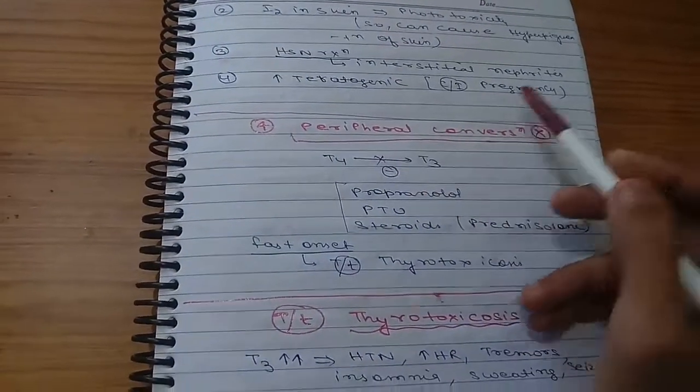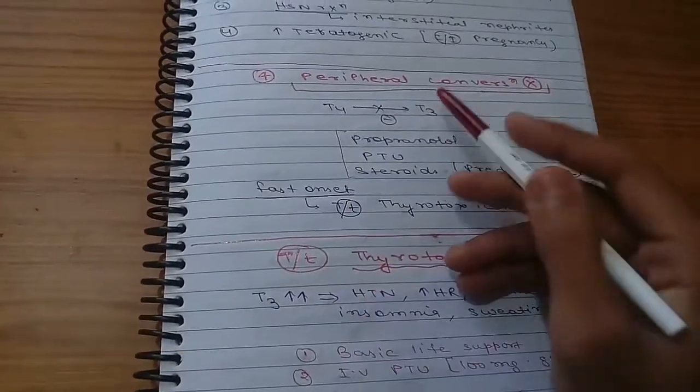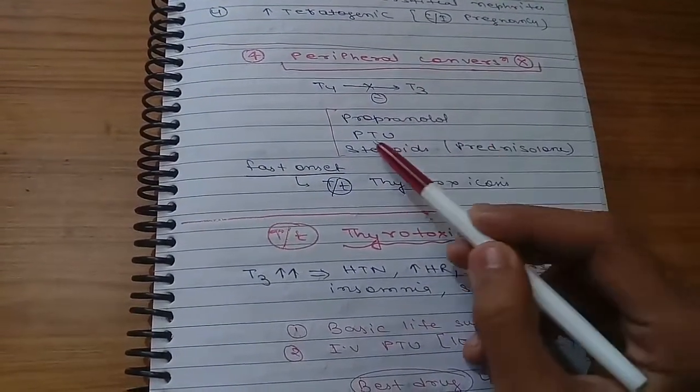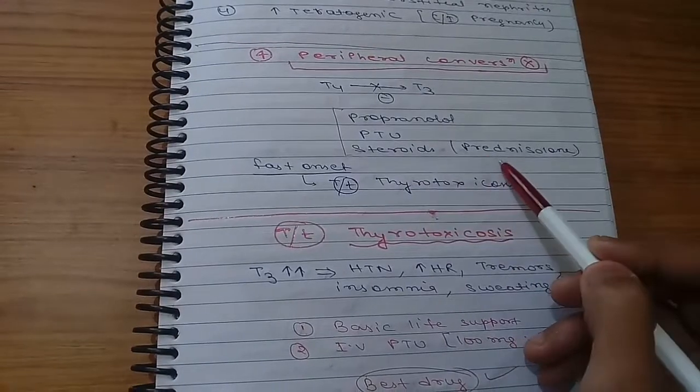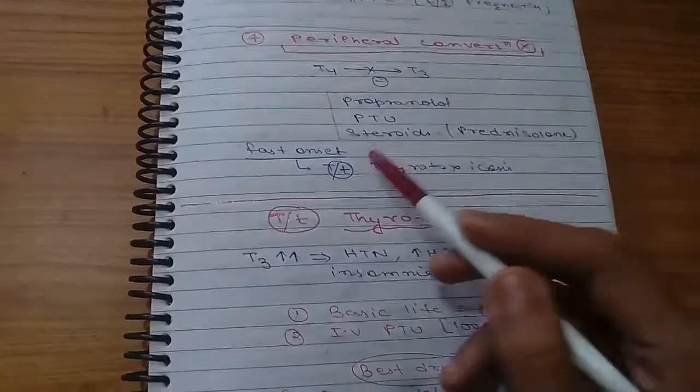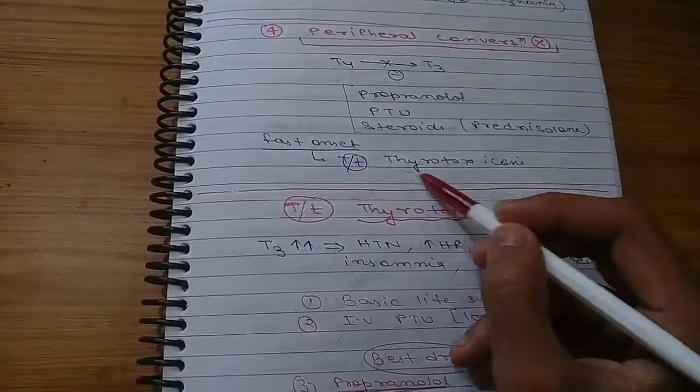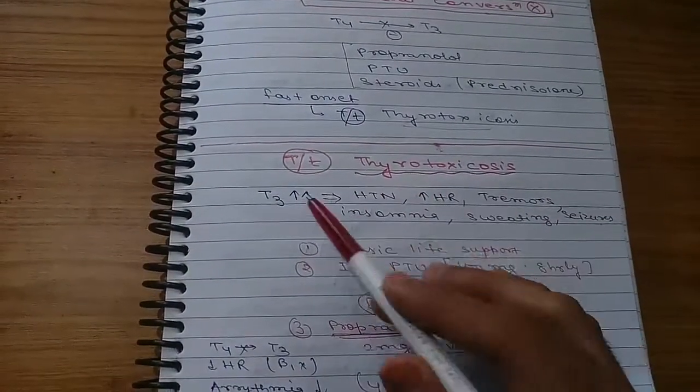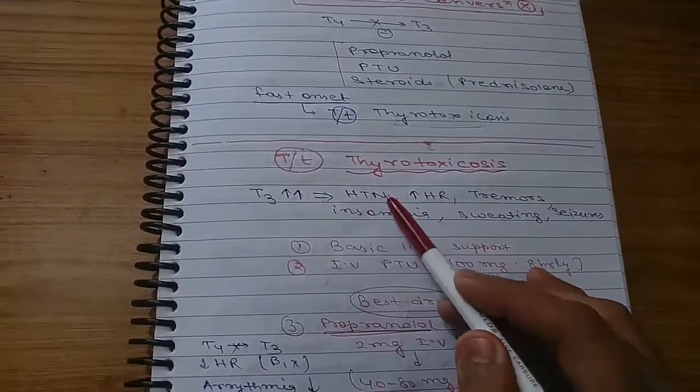The next group of drug is peripheral conversion blocker. It will block conversion of T4 to T3. It includes propranolol, PTU, and steroids. It has fast action so it can be used for treatment of thyrotoxicosis.